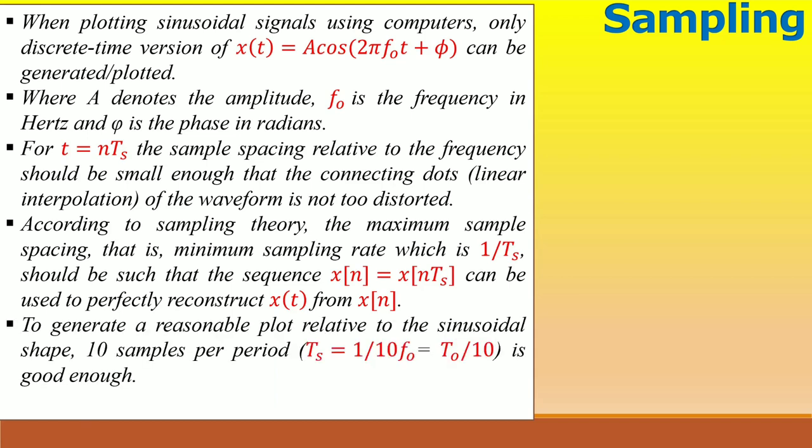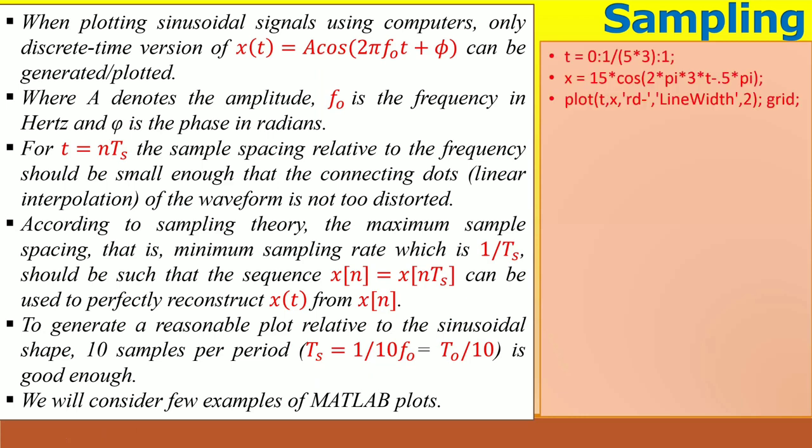To generate a reasonable plot relative to the sinusoidal shape, 10 samples per period or Ts = 1/(10f₀) or T₀/10 is good enough. We will consider a few examples for plotting in MATLAB. We consider a cosine signal with amplitude of 15, frequency f₀ = 3 hertz and phase of -π/2. The time vector of 1 second is created with T₀/5 to see if there is any distortion. We plot the signal in red color. Next, we chose T₀/10 for the time vector and plot in the green color.